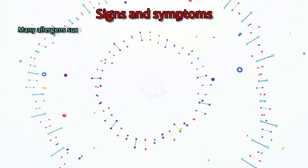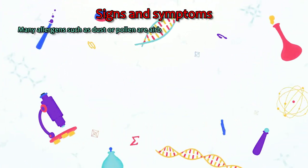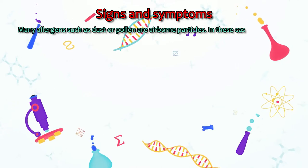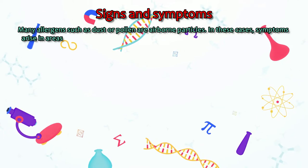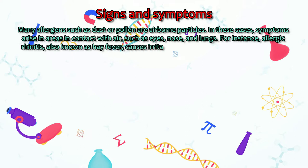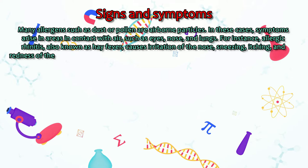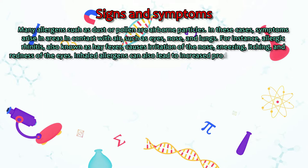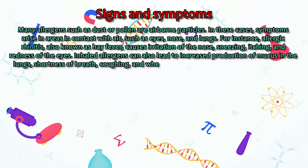Many allergens such as dust or pollen are airborne particles. In these cases, symptoms arise in areas in contact with air, such as eyes, nose, and lungs. For instance, allergic rhinitis, also known as hay fever, causes irritation of the nose, sneezing, itching, and redness of the eyes. Inhaled allergens can also lead to increased production of mucus in the lungs, shortness of breath, coughing, and wheezing.